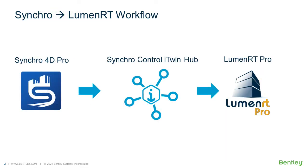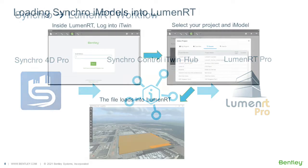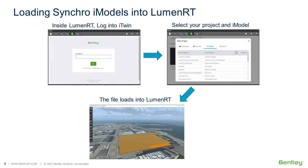This diagram explains how models go from Synchro into Luminar-T. Basically, it's a very simple process. You start with your Synchro 4D Pro model, upload that into the Synchro Control iTwin hub, and from there you pull it into Luminar-T Pro. Inside Luminar-T, you fire it up, log into the iTwin with your Bentley user account, then select your project and iModel, and the file loads into Luminar-T.